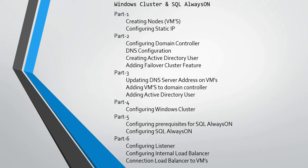In part 1 we would start with creating nodes and configuring static IPs. In part 2 we would configure the domain controller, Active Directory users, and add the failover cluster feature. In part 3 we would work around DNS servers and add those VMs to a domain controller. In part 4 we would configure Windows Cluster. In part 5 we cover prerequisites for SQL Always On and configure it. In part 6 we configure the listener, the internal load balancer, and connect your VMs into the load balancer.